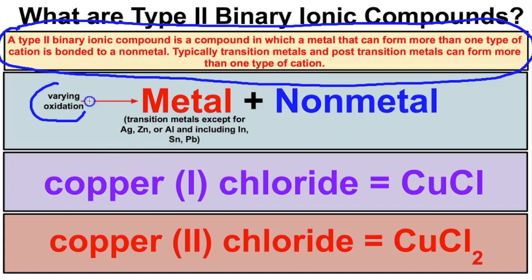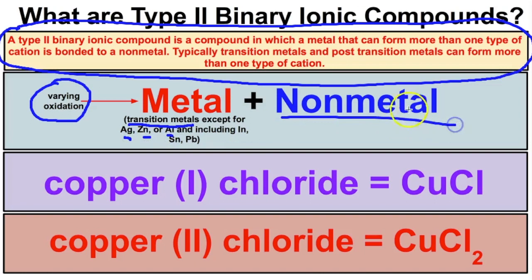In other words, it has a varying oxidation state. With type 2 binary ionic compounds, we have a metal that typically comes from the transition metals and the post-transition metals, with the exception of silver, zinc, or aluminum, bonded to a non-metal. So anytime we have such a metal bonded to a non-metal, it's going to be a type 2 binary ionic compound.